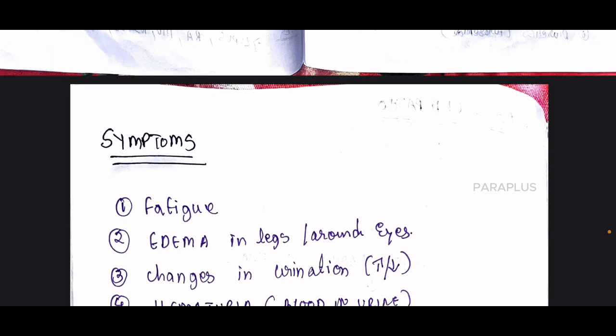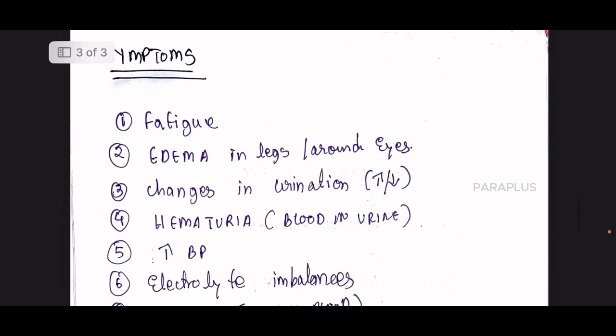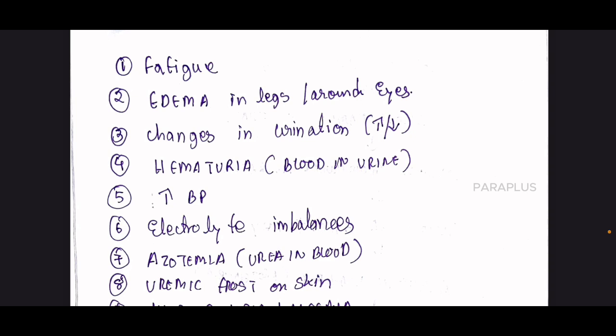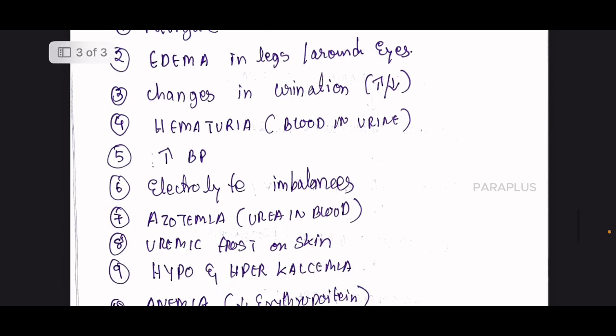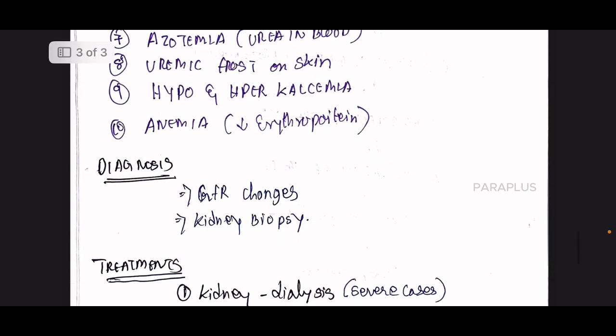CKD symptoms include fatigue and edema in the legs and around the eyes. There are changes in urination — which can decrease or increase. Hematuria is blood in the urine. There is increased blood pressure and electrolyte imbalance. Azotemia refers to urea accumulating in the blood; uremic frost appears on the skin as white dead cells due to uric acid. There is also hypocalcemia or hypercalcemia, anemia due to decreased erythropoietin, changes in GFR, and kidney biopsy findings confirming CKD.